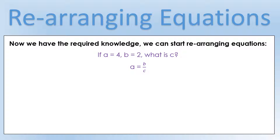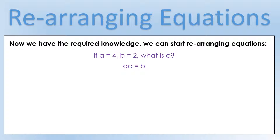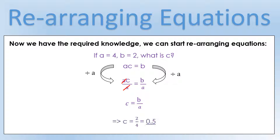Let's try a third type: quantity a equals quantity b divided by quantity c, and we're trying to calculate c — the thing on the bottom line. We add an extra layer to the method. If the quantity we want is on the bottom line, we first multiply both sides by that quantity. Multiplying both sides by c gives us a times c equals b, since the c's on the right cancel. Now c is being multiplied by a, so we divide both sides by a. We get ac over a equals b over a, the a's cancel, and c equals b divided by a — which is 2 divided by 4, so c equals 0.5.